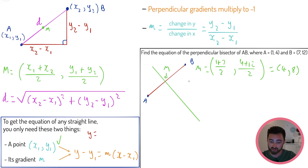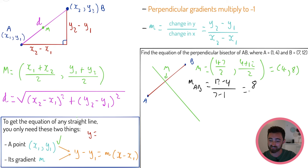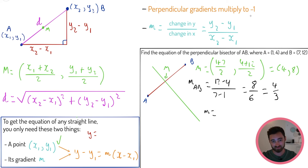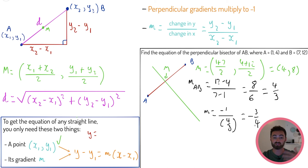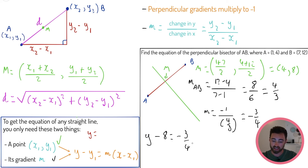The gradient of AB is the change in y over change in x: (12 − 4)/(7 − 1) = 8/6 = 4/3. For the perpendicular gradient, I flip the fraction and change the sign — I call this the 'perpen flip' — so 4/3 becomes −3/4. Now I have my gradient and my point (4, 8). Straight into y − y1 = m(x − x1), giving y − 8 = −(3/4)(x − 4).